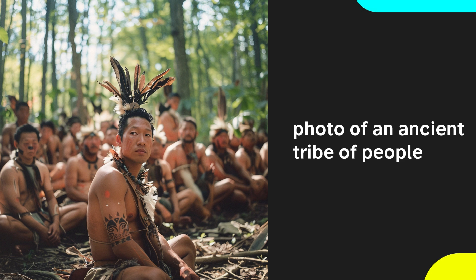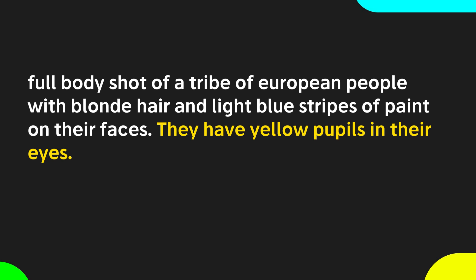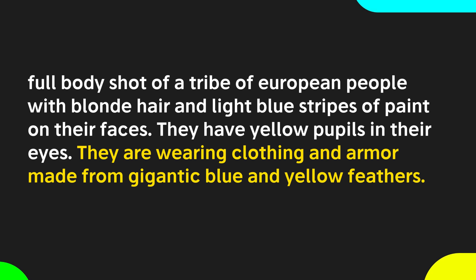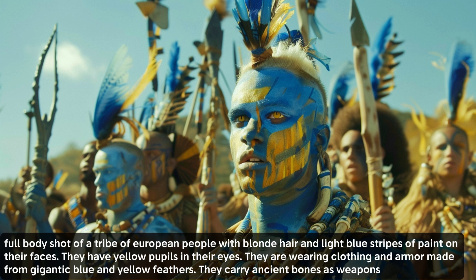We'll have to use our creativity and give Midjourney some more clues. Let's start with 'full body shot of a tribe of European people with blonde hair and light blue stripes of paint on their faces.' Using our imagination, we can ask them to have yellow pupils in their eyes — now it's already something unique. I'll go even further and change up the clothing to give them giant blue and yellow feathers, and finally they should also have weapons made out of bones. I've never seen images of a tribe like this.